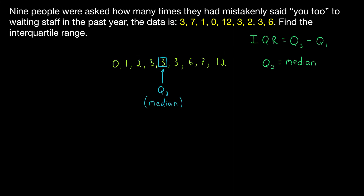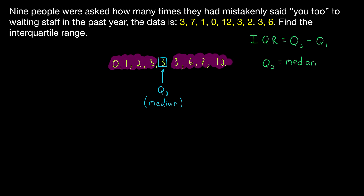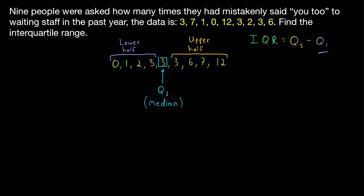The lower half of our data is all of the values below the median, and the upper half is all of the values above the median. Then Q1, the first quartile, is the median of the lower half of data.